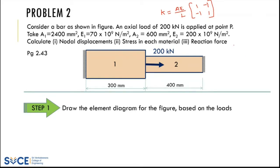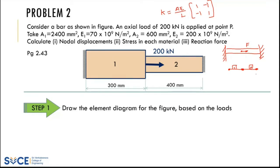For example, if you have a bar with a force F applied in between, the force can only be applied at nodal points. So you split it into element one (up to the force) and element two (the second part). Similarly, if there is a difference in cross-section — A1 and A2 — or a different material (e.g., aluminium and copper), you split it into separate elements.